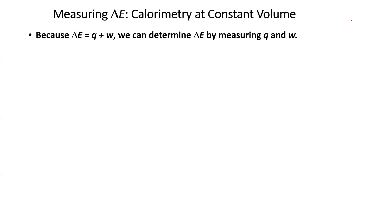Hello chemistry students. In this video we are going to be measuring delta E, the internal energy of a system, through calorimetry at constant volume. Because delta E is Q plus W, we can determine the change in internal energy by measuring the thermal energy, the heat, and work that the system does.